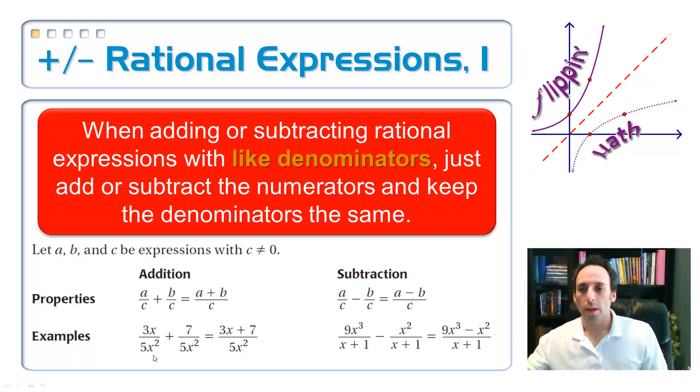And an actual example, if I look down at the very bottom there, I've got 5x squared in both the denominators. So keep it the same and just add up the tops. If you could simplify, you would, but you couldn't on that one. On the next example, x plus 1 is the same on both of them. So subtract the tops. You could factor the top, there's an x squared in both of these. So x squared times 9x minus 1, but nothing's going to cancel. So it was okay to leave it in that first form.